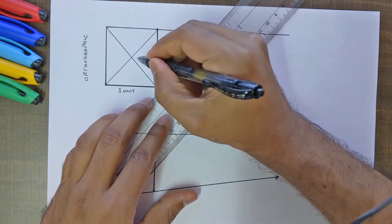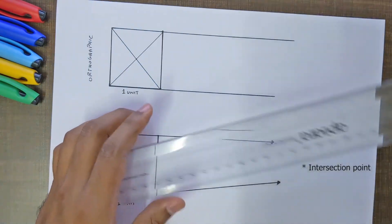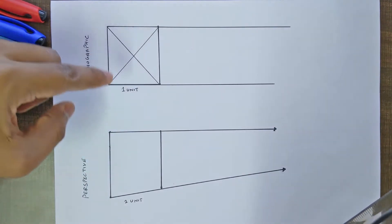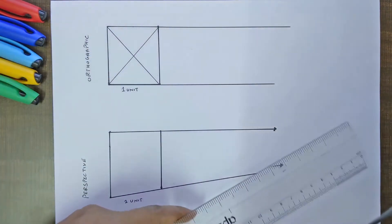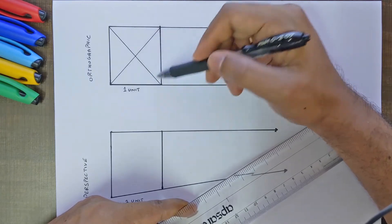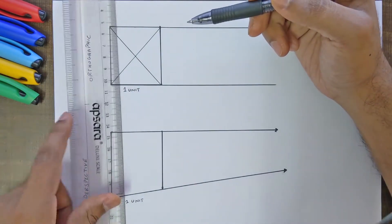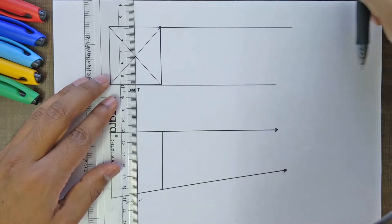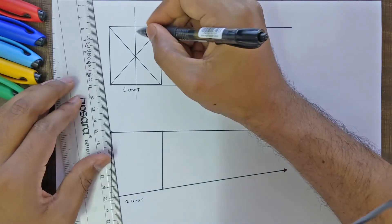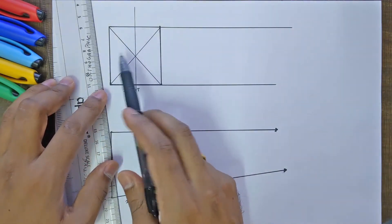By doing so we have an intersection point here. Now a vertical line passing through this intersection point divides the rectangle into two equal halves. If I just draw a vertical line, this has divided the rectangle into equal halves.